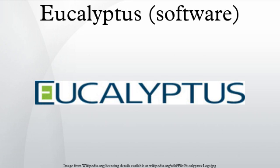Eucalyptus is free and open source computer software for building Amazon Web Services compatible private and hybrid cloud computing environments, marketed by the company Eucalyptus Systems. Eucalyptus is the acronym for Elastic Utility Computing Architecture for Linking Your Programs to Useful Systems. Eucalyptus enables pooling compute, storage, and network resources that can be dynamically scaled up or down as application workloads change. Eucalyptus Systems announced a formal agreement with AWS in March 2012 to maintain compatibility.